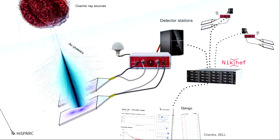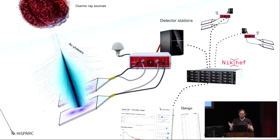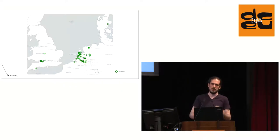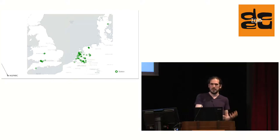This is how the network looks: huge things in space shoot out cosmic rays, those interact in our atmosphere, several detector stations detect these events, and all the data is sent to NIKHEF in Amsterdam where we do data analysis. There's a nice Django application that does all the bookkeeping. There are about a hundred detection stations, most of them at high schools — it's an outreach project where high school students build these detectors and put them on the roof of their schools.